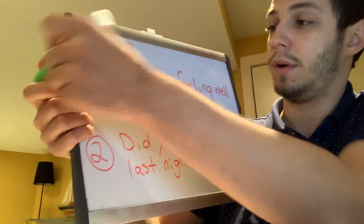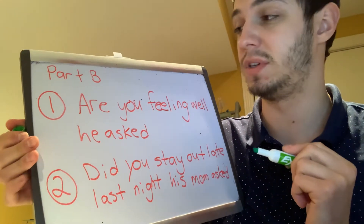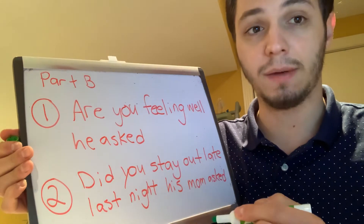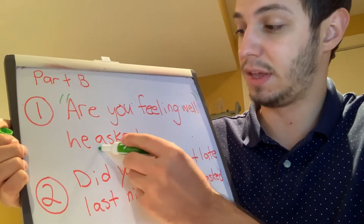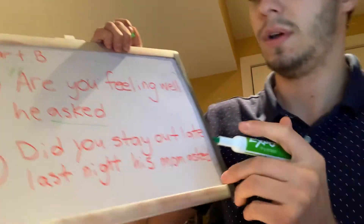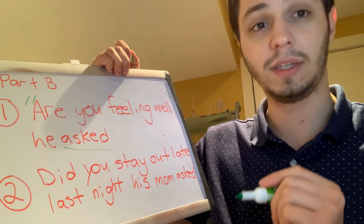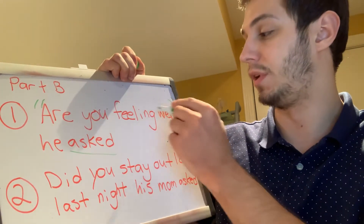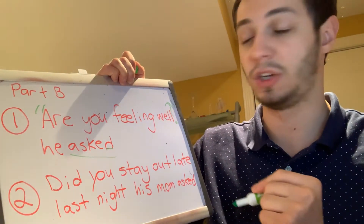Let's begin with the first one. This is the way it will be written in your book. Number one says: are you feeling well he asked? Our first job is to find the exact words that he asked — those words are 'are you feeling well.' So around those words, I'm going to add in my quotation marks. Because it has the keyword 'asked,' we know that this will be a question. When we add in our question mark, we don't need to add in our comma — the question mark will replace the comma. The question mark goes before the ending quotation mark. So now the sentence reads: opening quotation mark, 'Are you feeling well?' question mark, closing quotation mark, he asked, period.